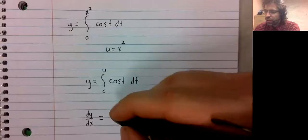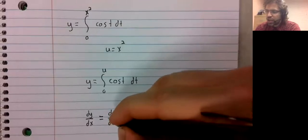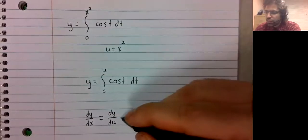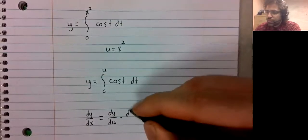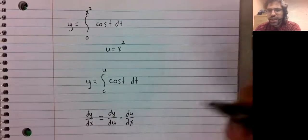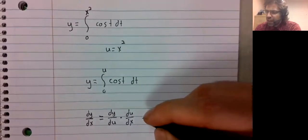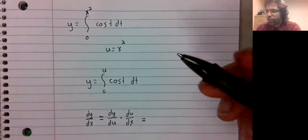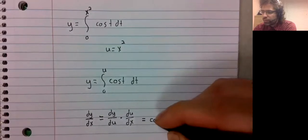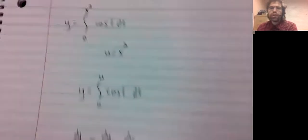Well, dy dx, according to the chain rule, is dy du times du dx. And now we continue to be careful. dy du is the cosine of u.